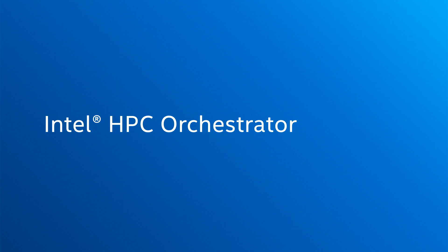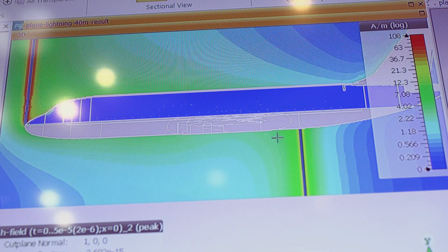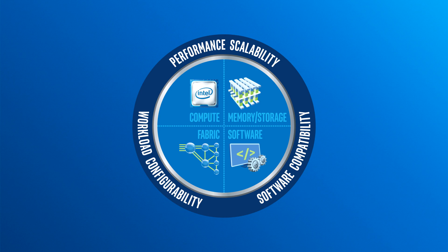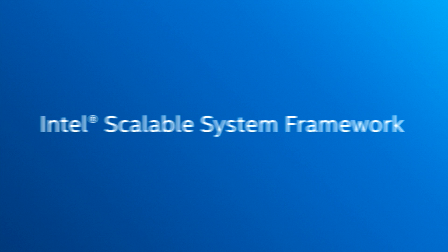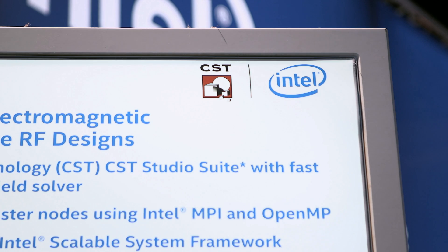That will help us in terms of validating that CST can run on the Intel HPC cluster, which in the end will help our customers as they're putting together their systems and clusters. CST Studio Suite has been Intel cluster ready for several years now. Now we're looking forward to the next challenge, which is moving towards the scalable systems framework. The ongoing collaboration between CST and Intel is critical, as Intel Xeon and Xeon Phi and other platforms can provide significant advantages to our customers.